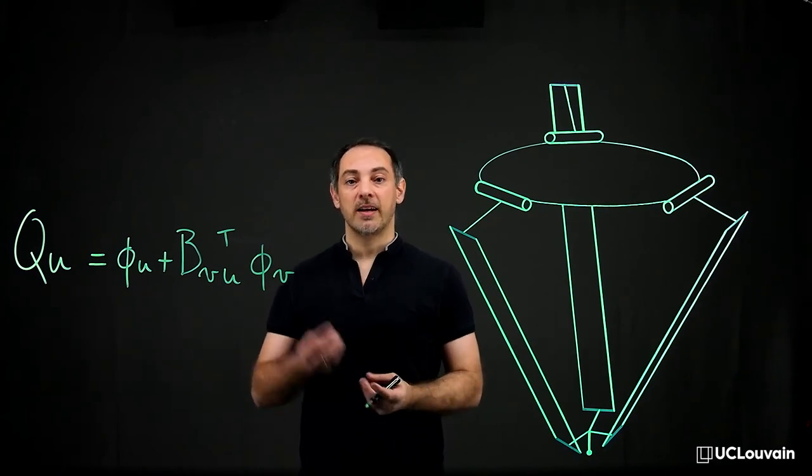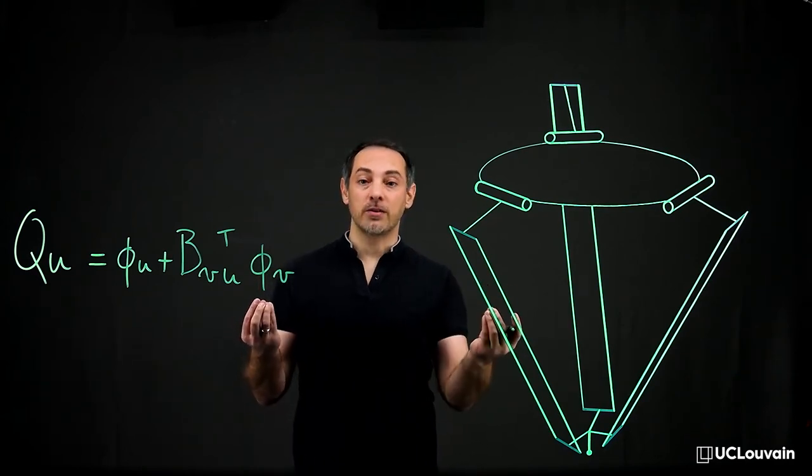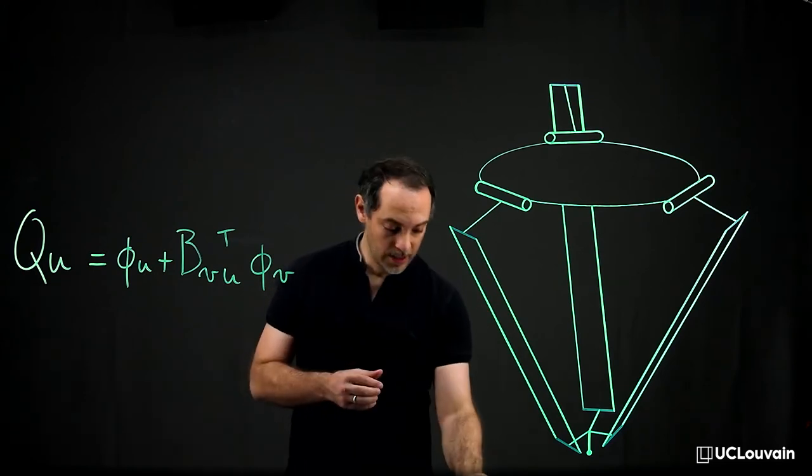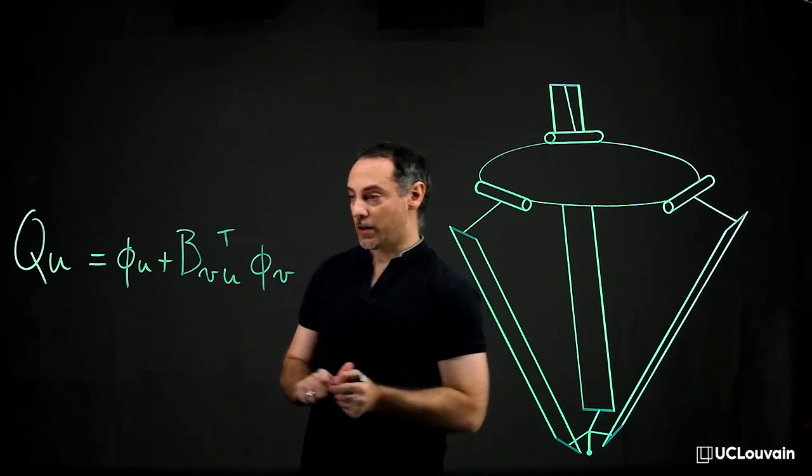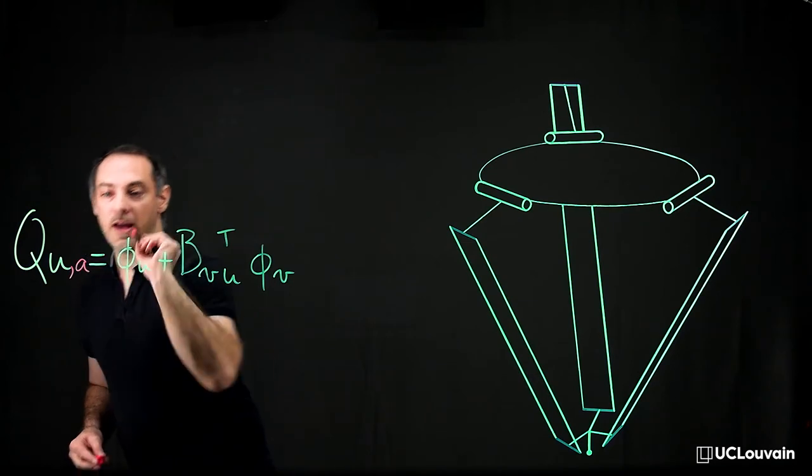Assuming that the actuated and independent joints coincide, this equation becomes Q_ua = φ_u + Q_up.